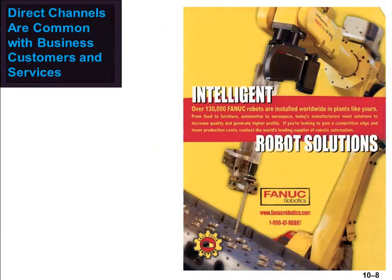Many business products are sold direct to customer. For example, a robotic solution featured in an ad for Fonhoek Robotics might be sold direct. In business markets, there are fewer transactions; orders tend to be larger and customers tend to be concentrated in geographic areas. Once relationships are established, e-commerce systems can handle routine replenishment. Service firms also frequently use direct channels. However, some producers use intermediaries to provide after-sale services.